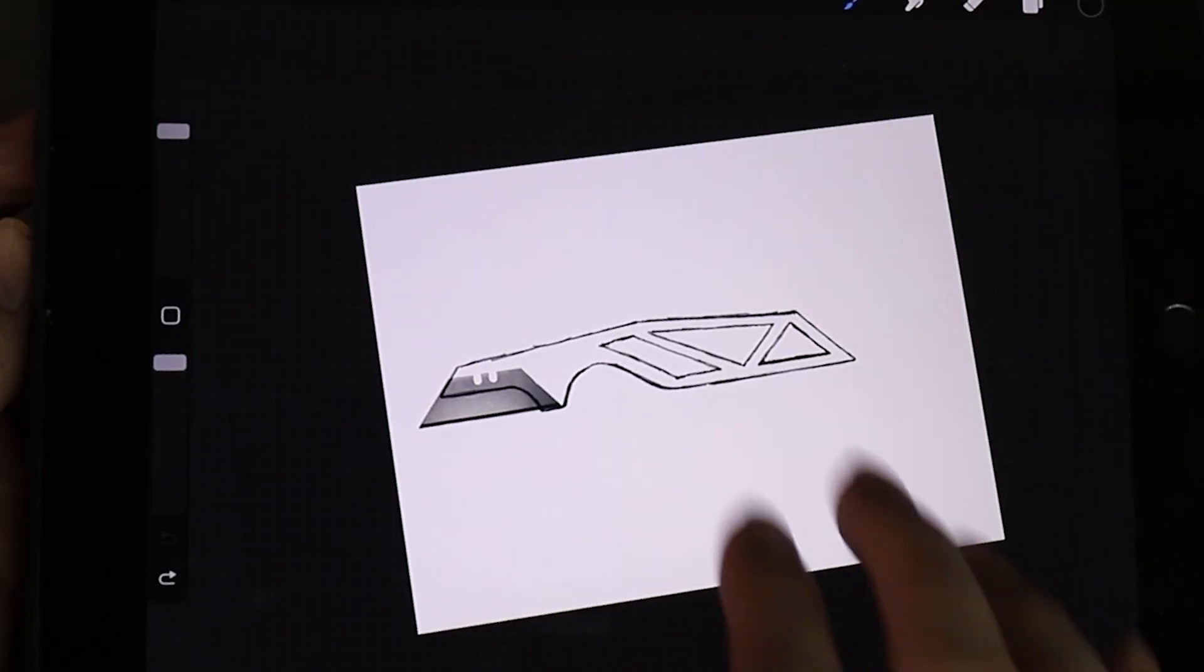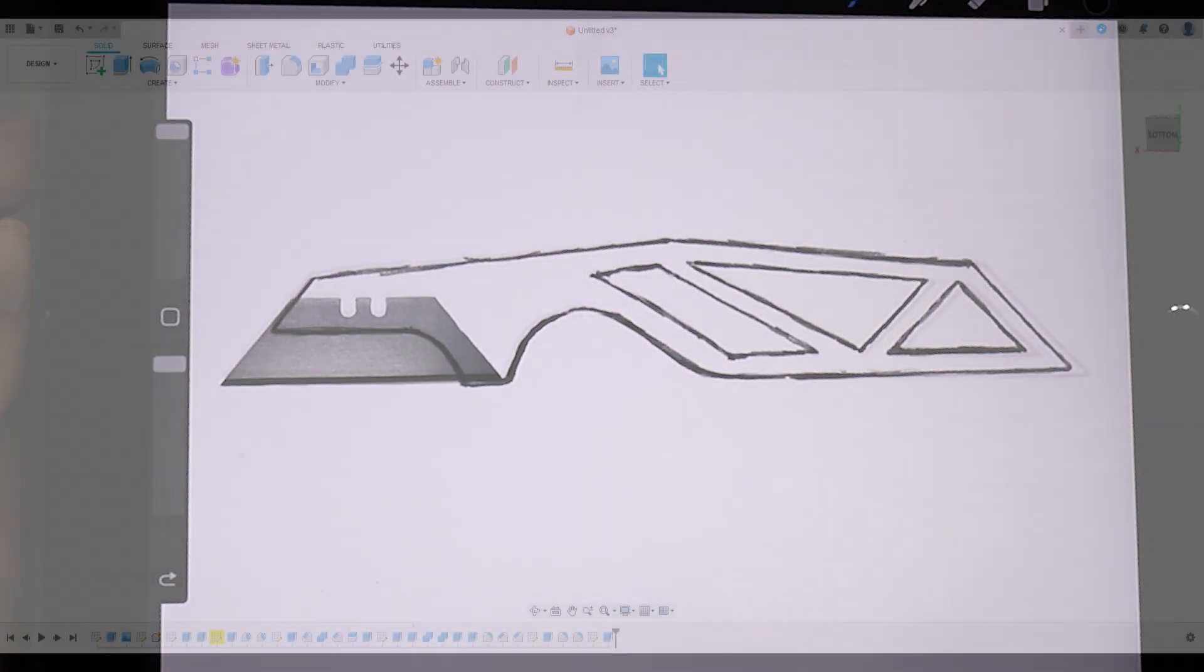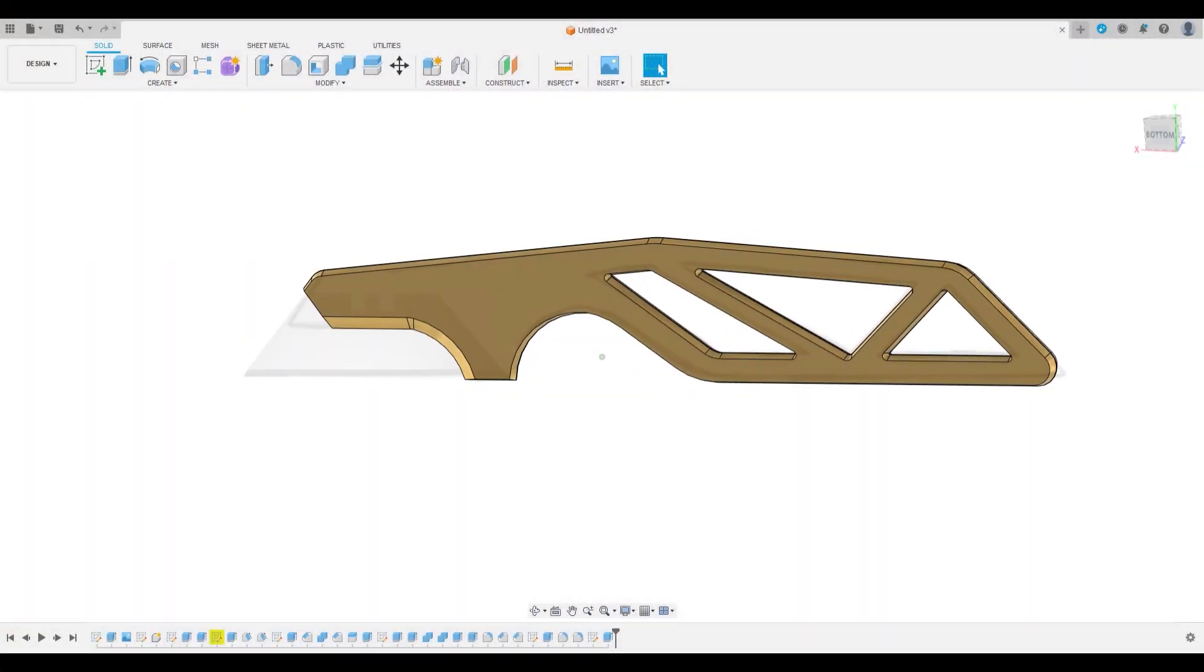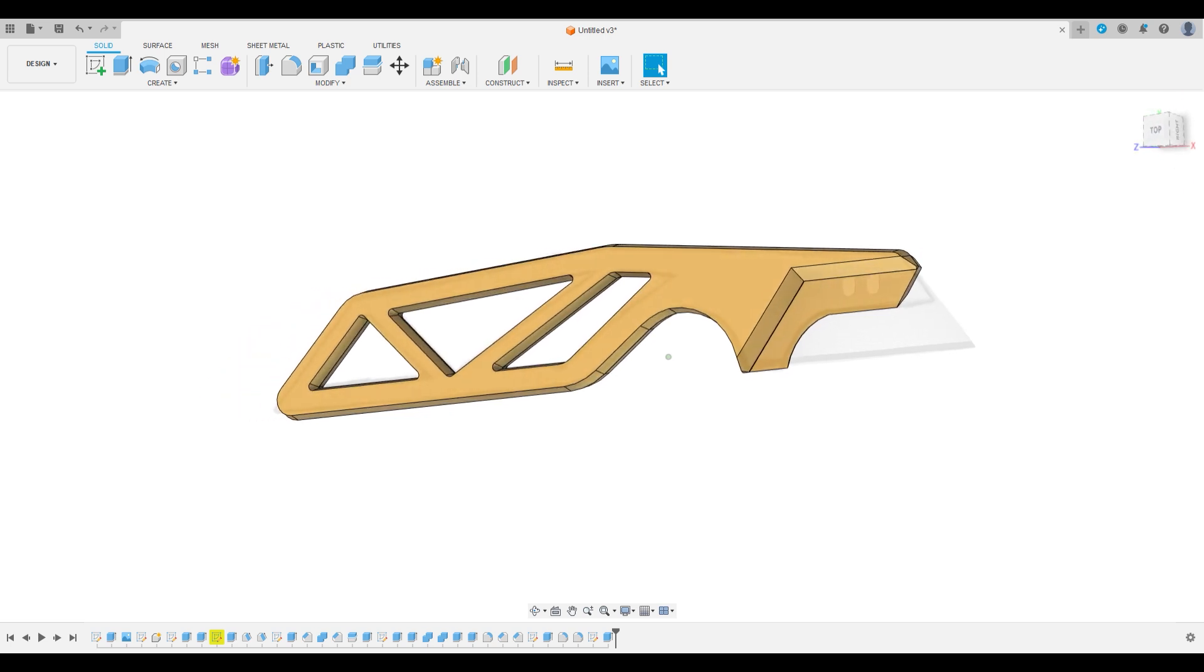The first step is to come up with an interesting design, and to do that I took a picture of a razor and sketched out some designs until I had something that I liked. Once I did, I created a 3D model in Fusion 360 and then 3D printed it.